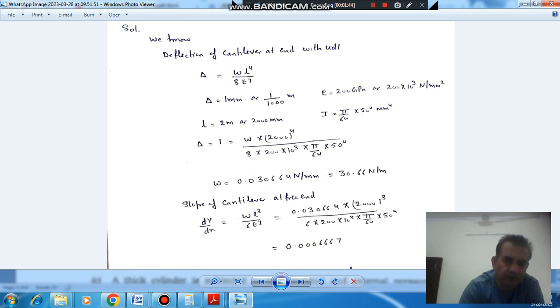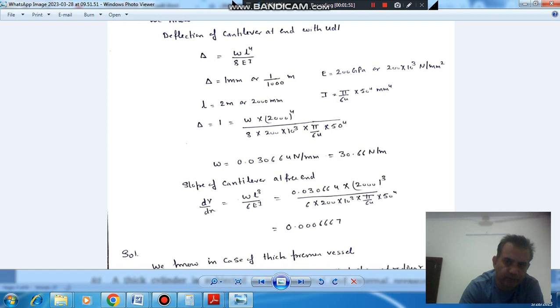So if we multiply by 1,000, then it will be 30.66 Newton per meter. So that is the UDL.